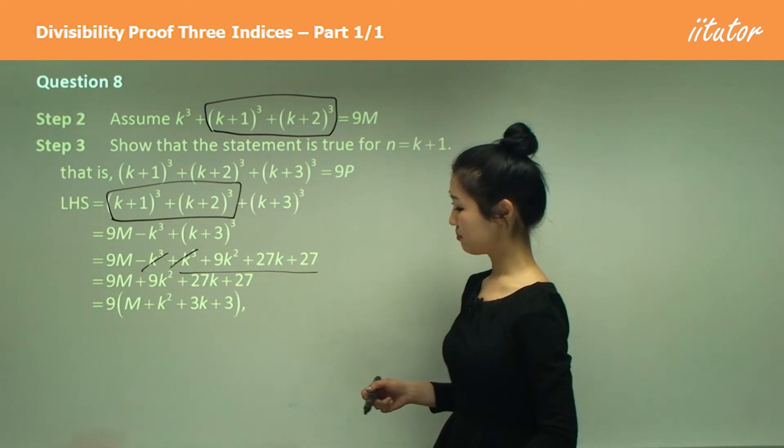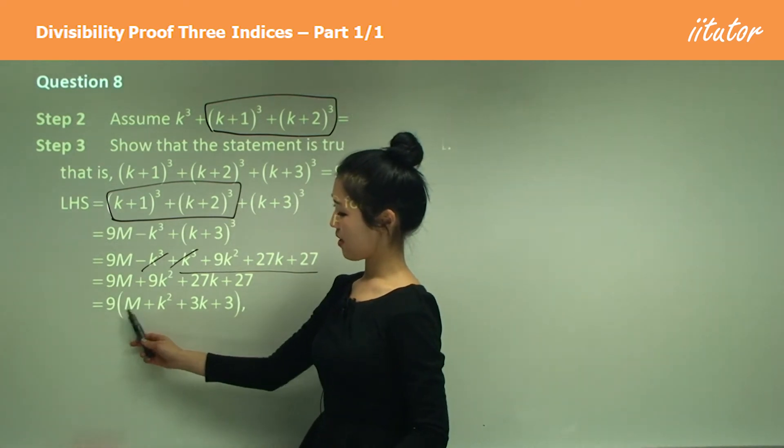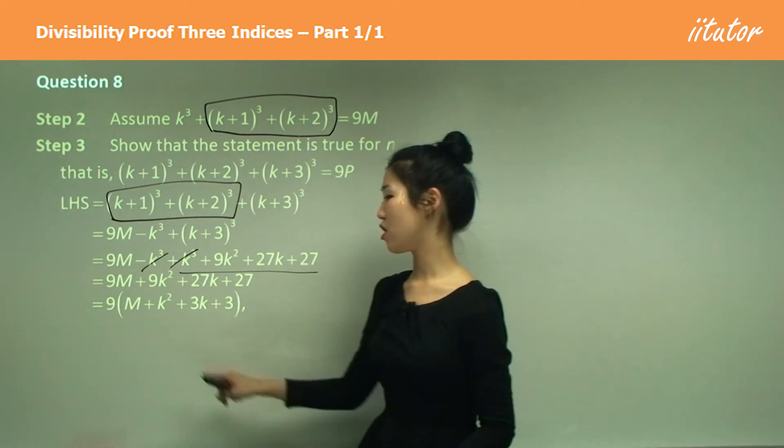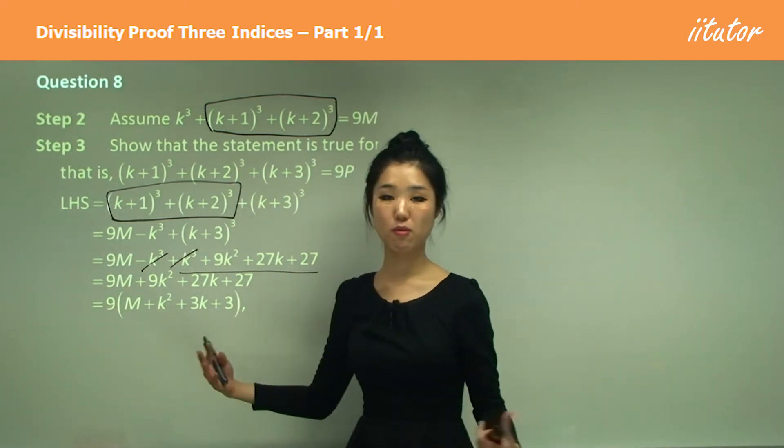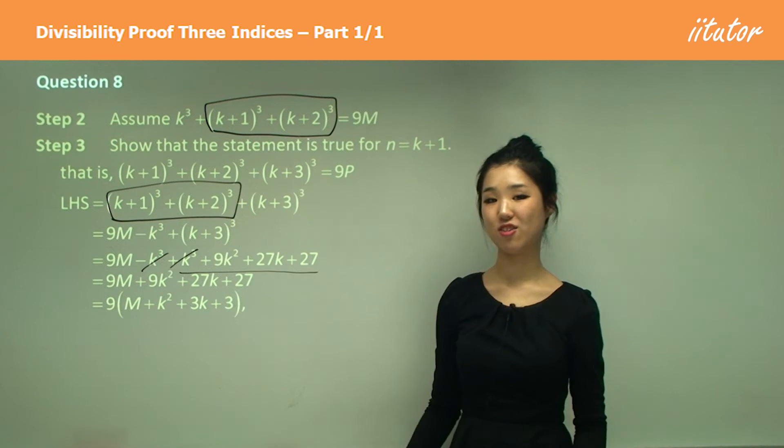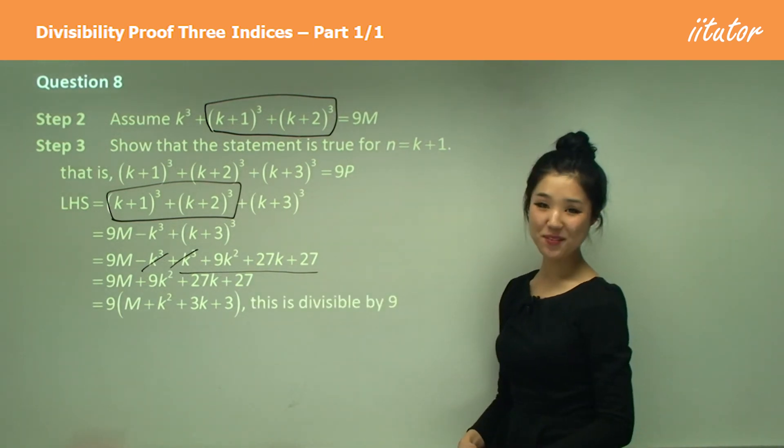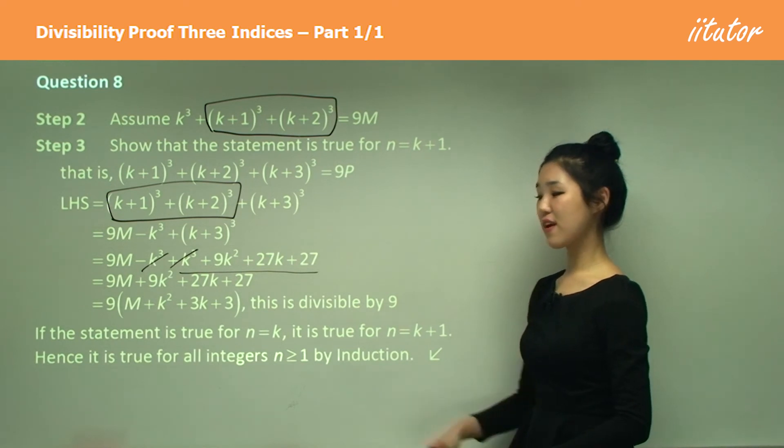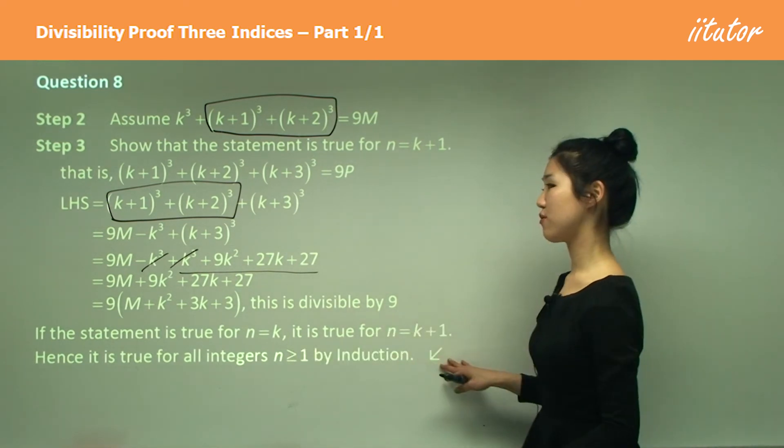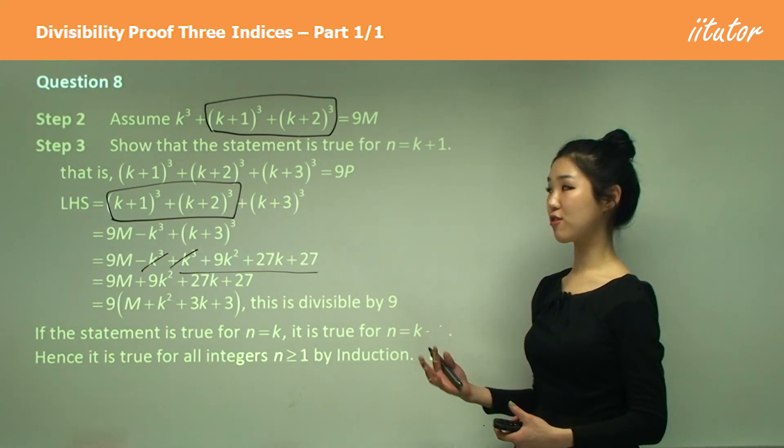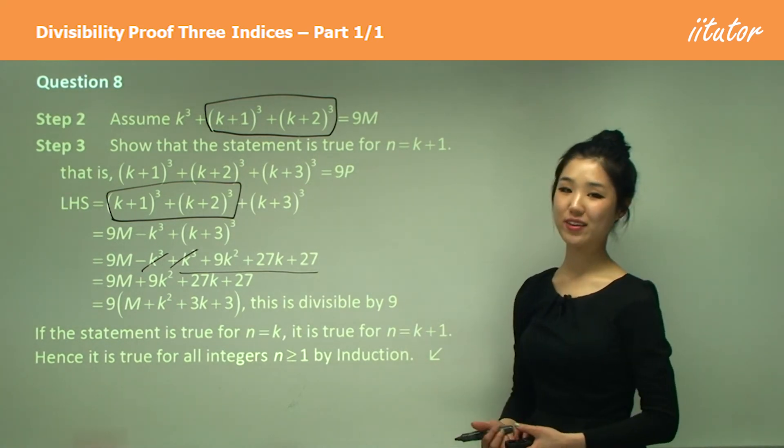So I can take 9 out as a common factor. And this is what's left inside the brackets. We know that m is a positive integer, so no matter what I add, it's going to remain positive and an integer. So therefore, I can clearly say that it's divisible by 9. Therefore, it's true for n equals k plus 1, and it's true for n greater than or equal to 1 by the use of our induction.